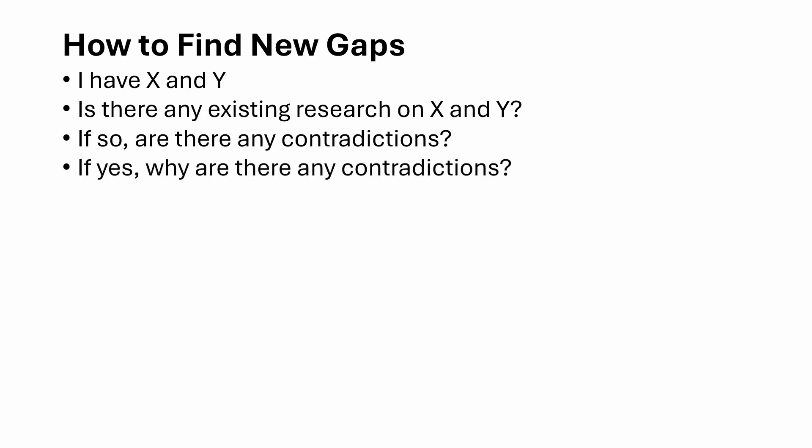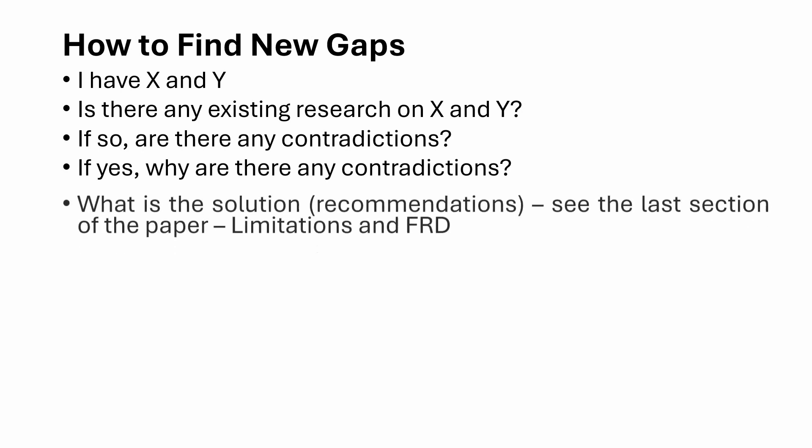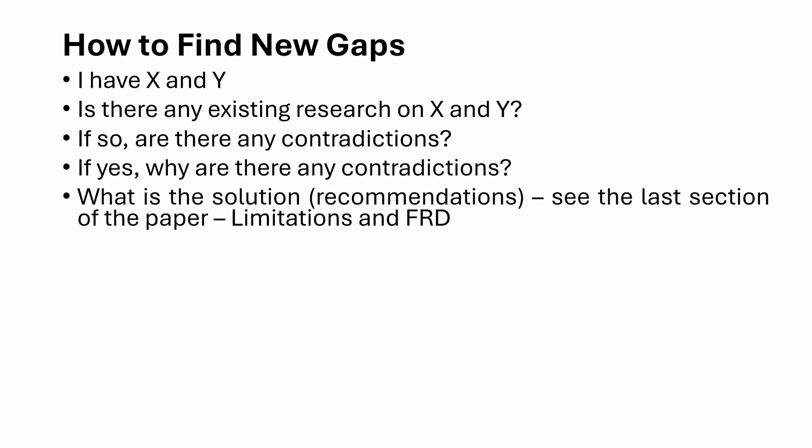Why are there any contradictions? You have to read through those papers' discussion sections and find out the particular reasons provided that show why there are contradictions. Then look at the solutions and recommendations — see the last section of the paper.